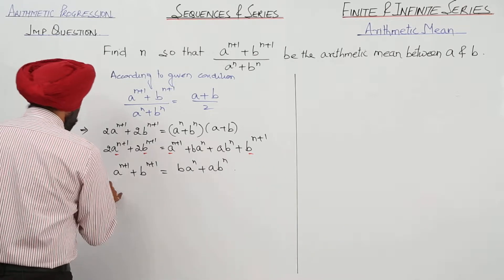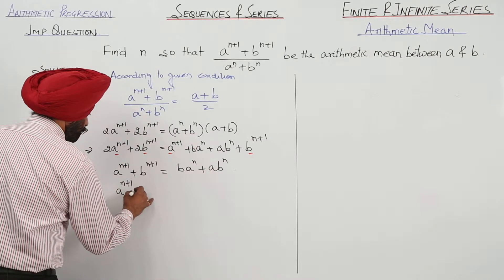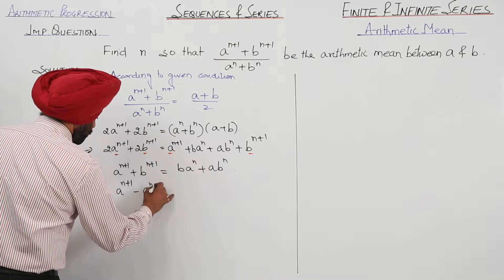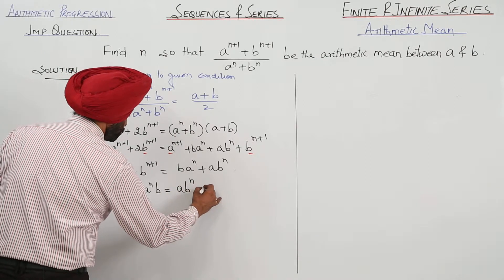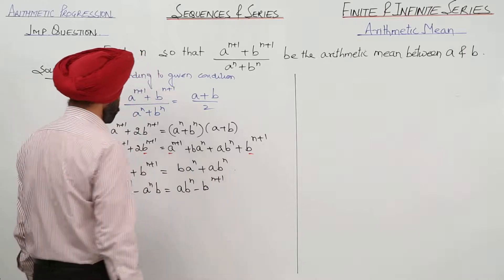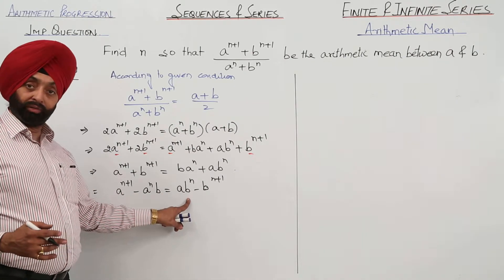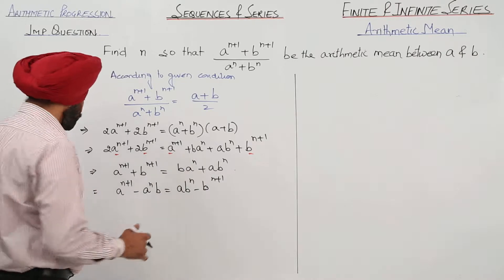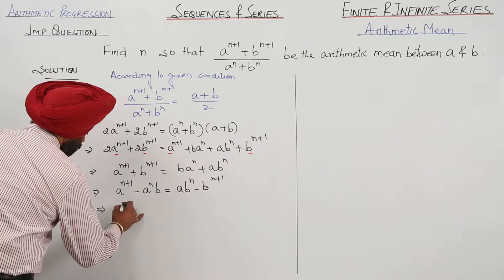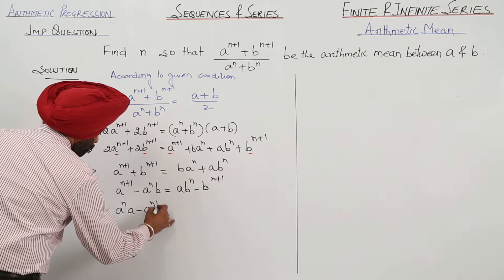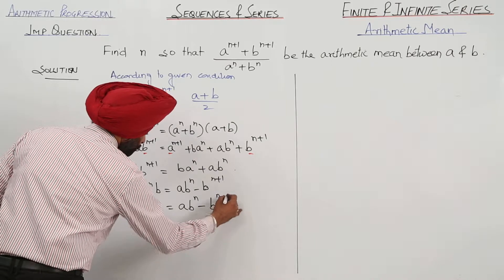Now, rearranging: a raised to power n plus 1 minus a raised to power n times b equals a times b raised to power n minus b raised to power n plus 1. Terms with a raised to power n are on one side, and terms with b raised to power n or b raised to power n plus 1 are on the other side. Splitting each side, we get a raised to power n times a minus b equals a times b raised to power n minus b.